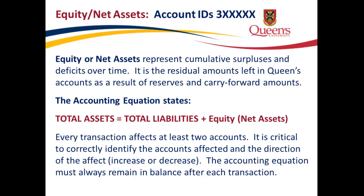Equity or net assets represent cumulative surpluses and deficits over time — the residual amounts left in Queen's accounts as a result of reserves and carry-forward amounts. The accounting equation states: total assets equal total liabilities plus equity (net assets). Every transaction affects at least two accounts. It is critical to correctly identify the accounts affected and the direction of the effect — increase or decrease. The accounting equation must always remain in balance after each transaction.